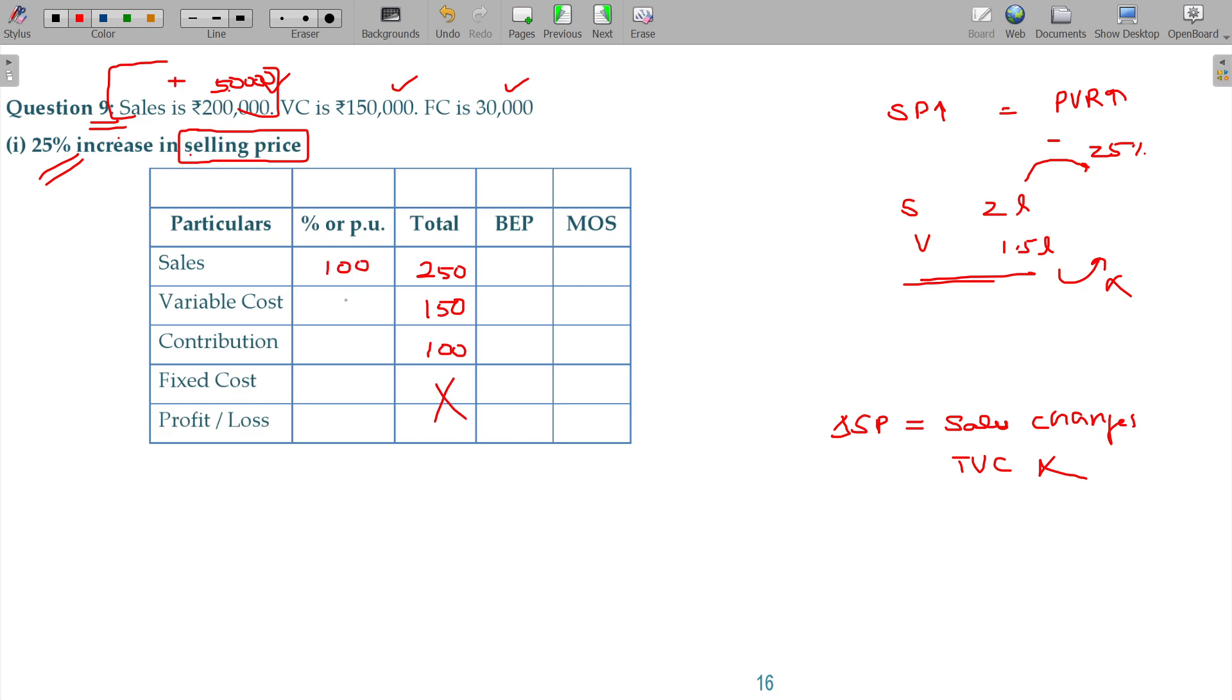Sales 100, 150 into 100 divided by 250. So you can get it now. Your PVR here being 40%.